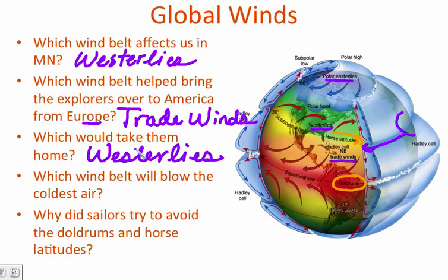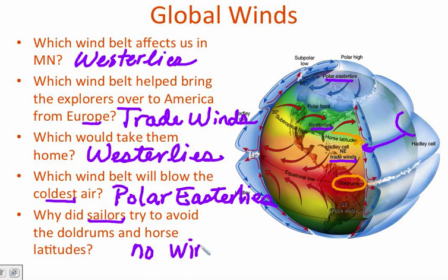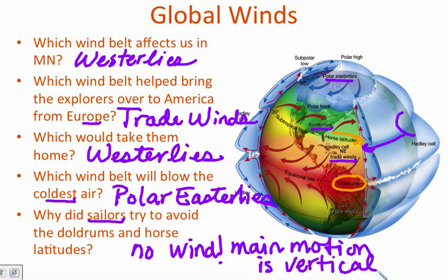Coming from the west, those winds are moving predominantly east, bringing them back to their home. The wind belt that would blow the coldest air would, of course, be the one with poles in its name. Polar Easterlies. And finally, why would you, as a sailor, try to avoid the doldrums and the horse latitude? Reason being, there's no prevailing wind in that area. The main motion of wind is vertical. Because that air is rising and sinking at those two locations, it's not good for your sails.